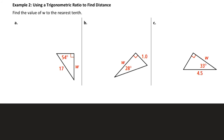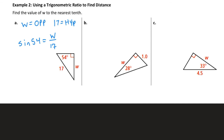In example 2, part A, 54 is our reference angle. W, in reference to 54, is the opposite side. 17 is the hypotenuse. So I would set up this equation using the sine of 54, because I have the opposite side and the hypotenuse. So: sine of 54 equals W over 17.